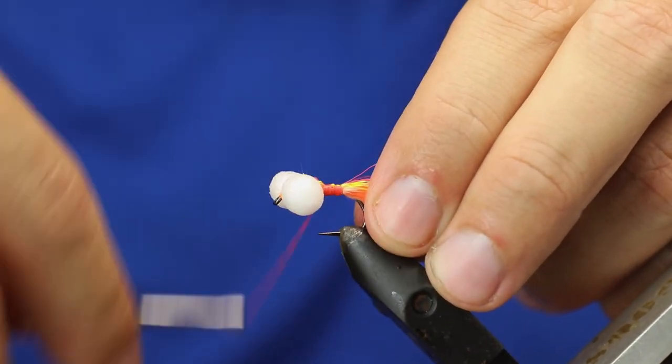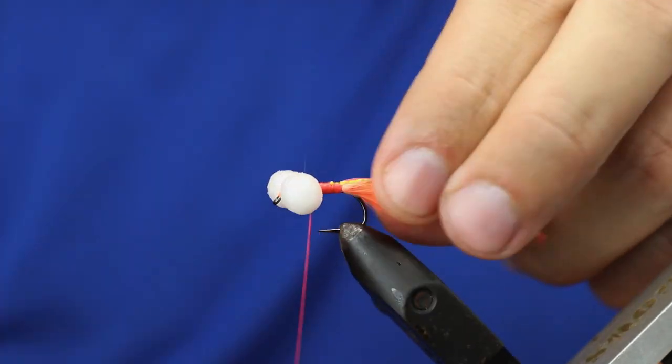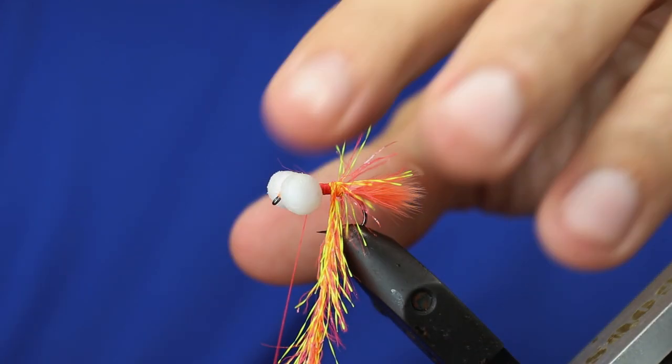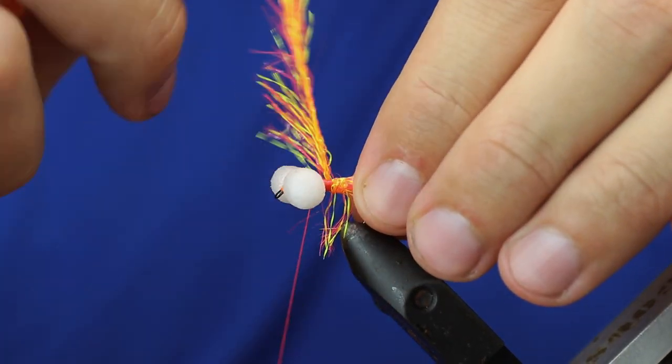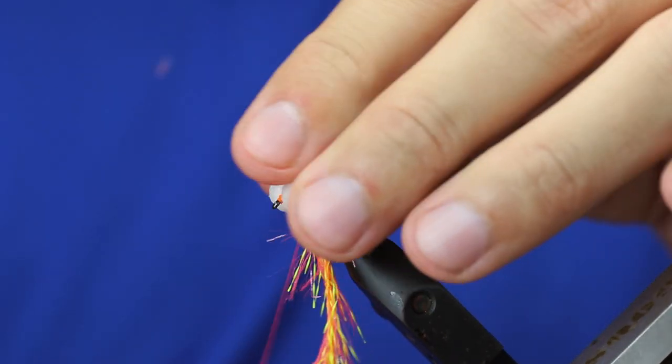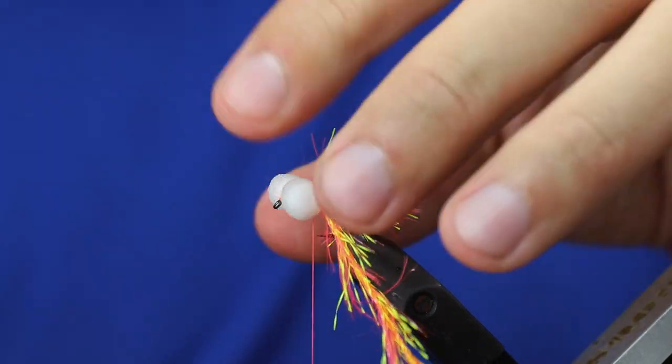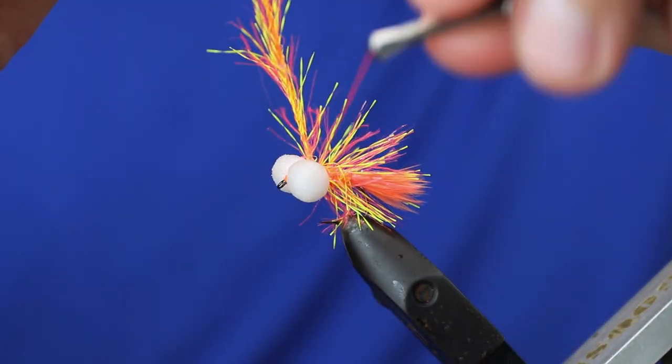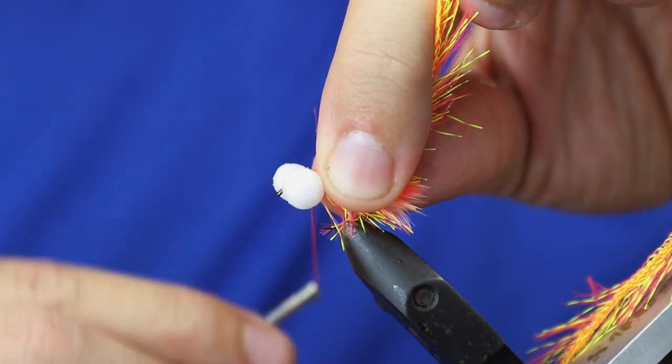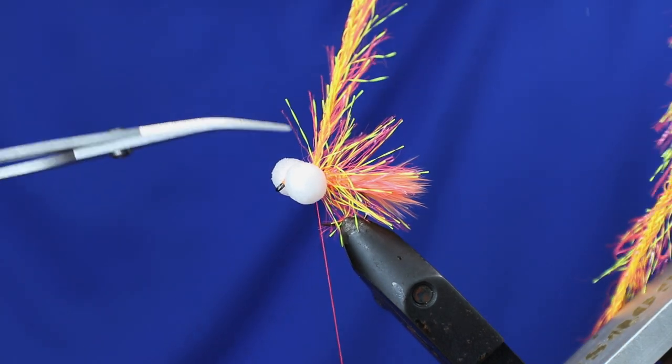Work the thread back up and then we're just going to do some open turns. Put over four or five turns there, catch it in, cut it off.